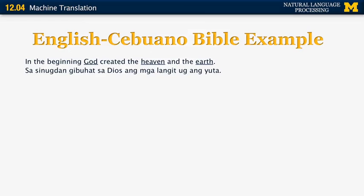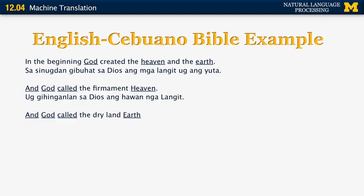Here is another example from a Bible paragraph in English and its translation in Cebuano, a language from the Philippines. Let's try to figure out the translations for three words — God, heaven, and earth — from English to Cebuano using three pairs of aligned sentences. One useful clue: Spanish used to be commonly spoken in the Philippines, so some Cebuano words are cognates. For example, 'Dios' — if you know Spanish — you can immediately figure out it means God. More importantly, the basic idea is to look at co-occurrence statistics: words that appear in the same sentences in both languages and don't appear in any of the others. Can you figure out the translations for heaven and earth just based on those three examples?